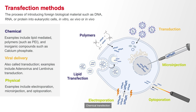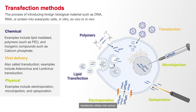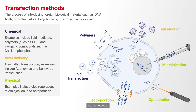Chemical transfection utilizes chemical reagents such as lipids or polymers to facilitate the entry of genetic material into the cell, while virally mediated transfection utilizes viral vectors such as adenoviruses, lentiviruses, or retroviruses to deliver genetic materials into the host cells.